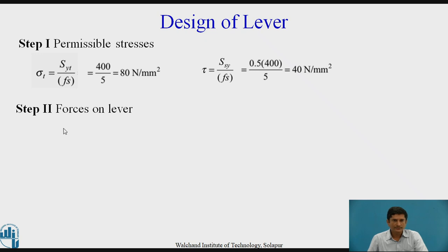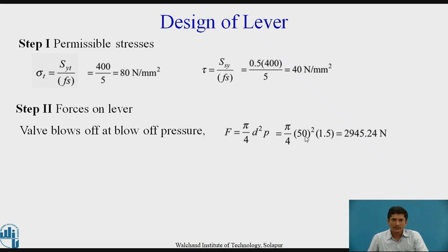Then, we need to calculate what are the forces acting on the lever. We must be very careful about calculating the forces. The valve blows off at a blow off pressure. The force is equal to area pi by 4 D square of the valve multiplied by the blow off pressure. The diameter of the valve is 50 mm and the blow off pressure is 1.5 MPa. The force is around 2945 N.